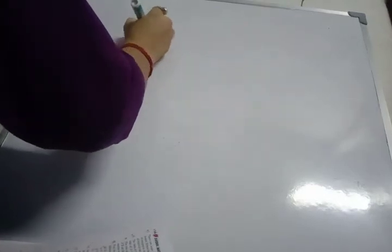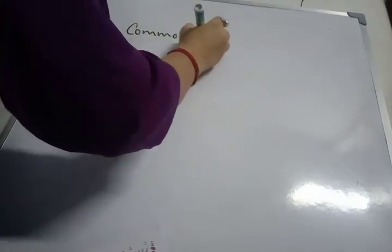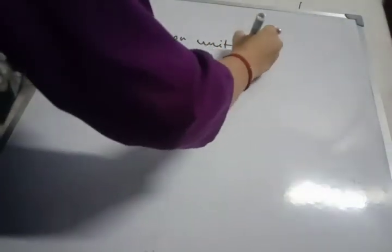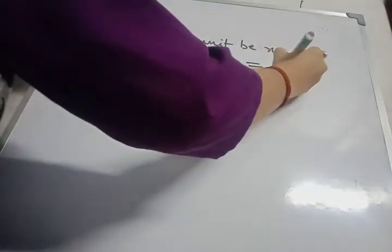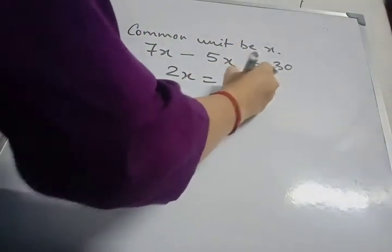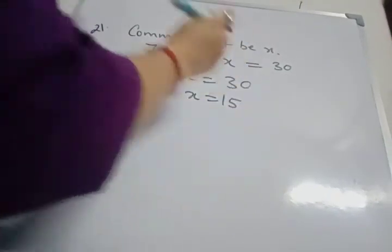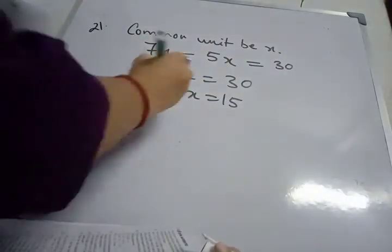So common unit be X and 2 numbers are 7X and 5X. Now difference between these 2 numbers equals to 30. So 2X equals to 30. X equals to 15. Right. Now find the numbers.